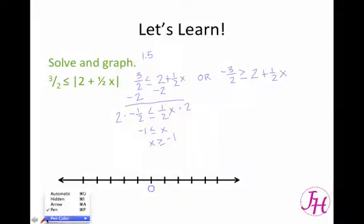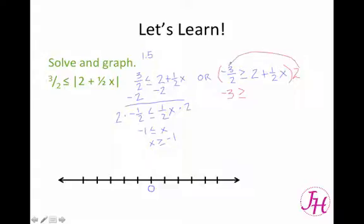Now over here on the other side, let's try a different method. We could multiply the entire inequality by 2 to get rid of the fractions if you wish. So 2 times negative 3 halves gives you negative 3. 2 times 2, make sure we distribute it to everything, 2 times 2 gives you 4, and then 2 times 1 half gives you plus 1 x.